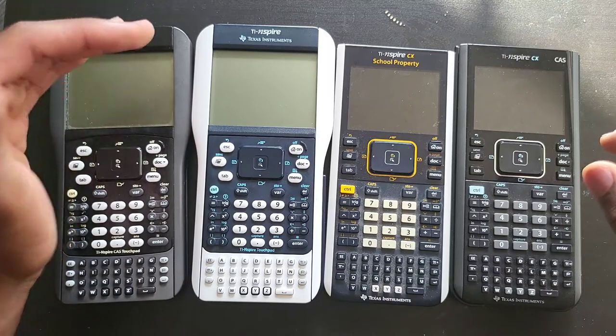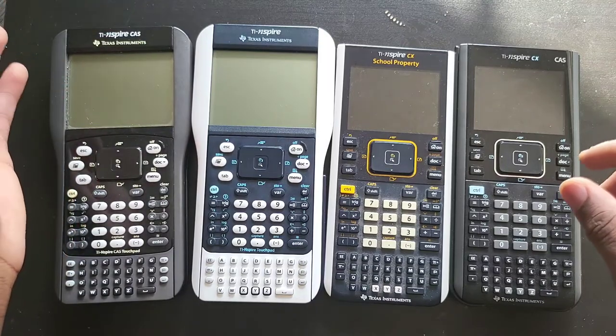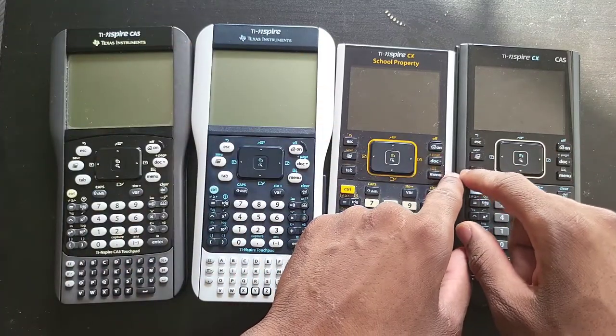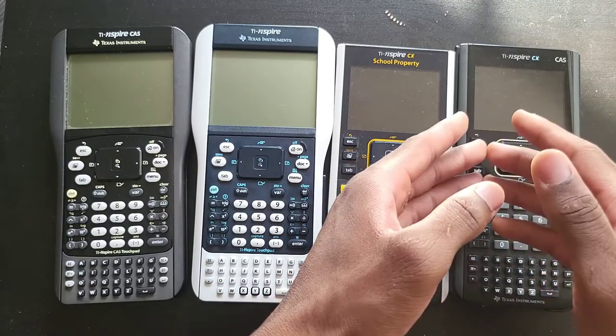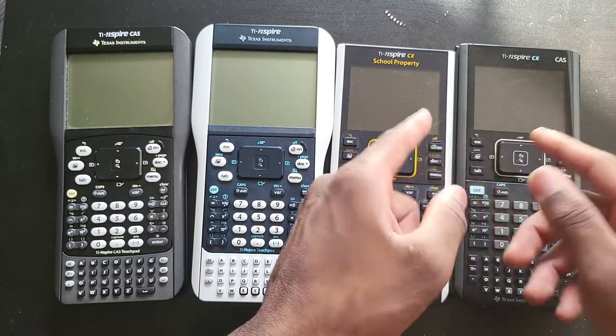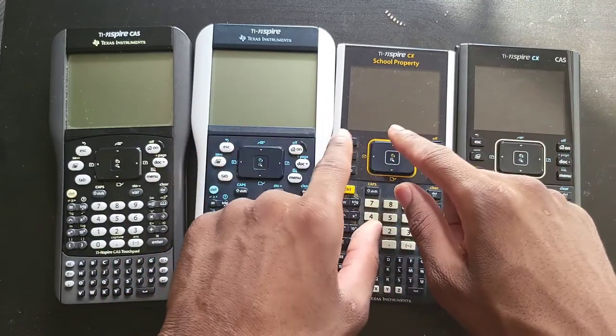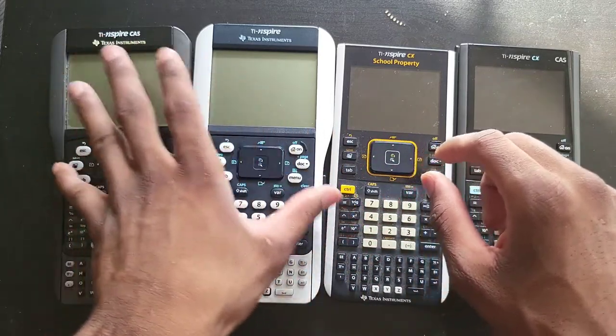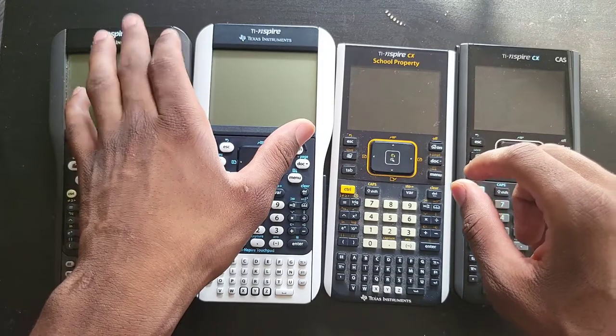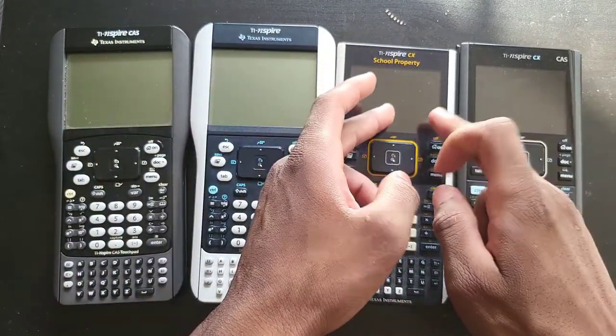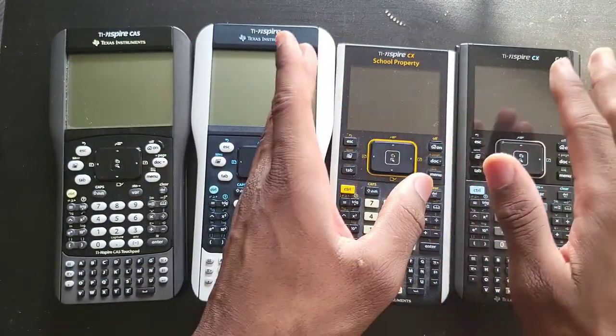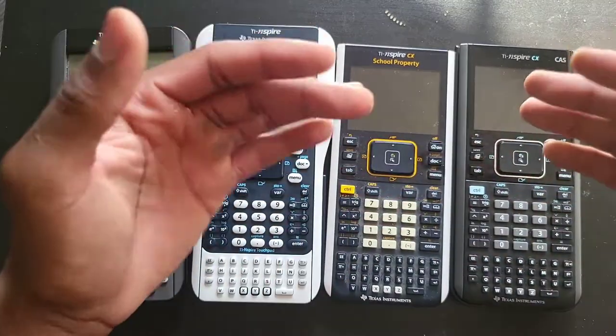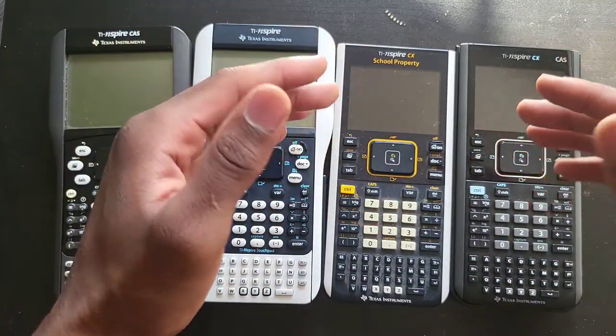I believe the first one that came out in 2007 and this one have the same processors, same clock speed. On the other hand, this one is clocked at 132 megahertz. There's only one year difference between these guys - 2010 for these two non-CAS and CAS models, and 2011 for these two non-CAS and CAS models.